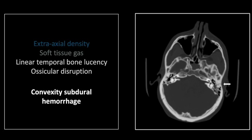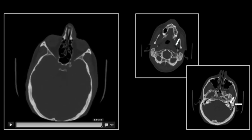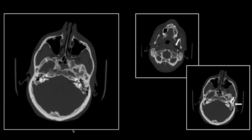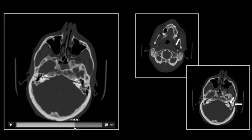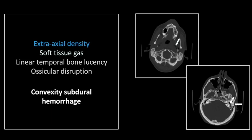These longitudinal fractures are particularly associated with ossicular disruption. Compare the ossicles to the opposite side — pretty impressive. The malleus and the incus are not aligned as they should be, and this obviously does result in conductive hearing loss. The transverse temporal bone fractures, in contrast, will result in sensorineural loss and disruption of the otic capsule. That soft tissue gas, the linear fracture line, and the dissociation of the ossicles are all present. So that is a convexity subdural hemorrhage with an associated temporal bone fracture and ossicular disruption.